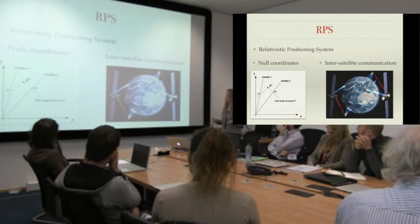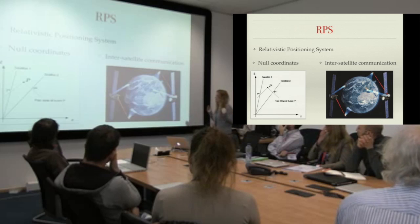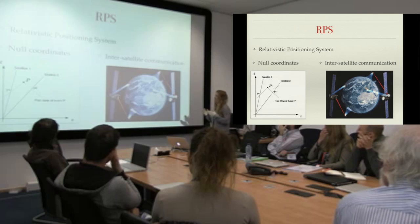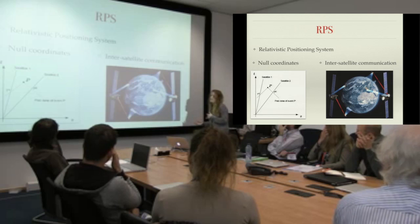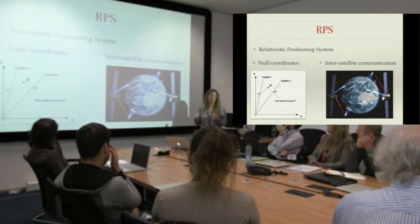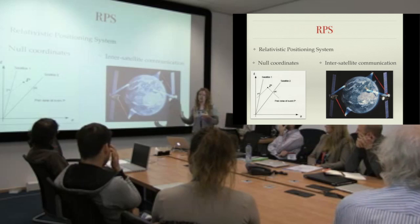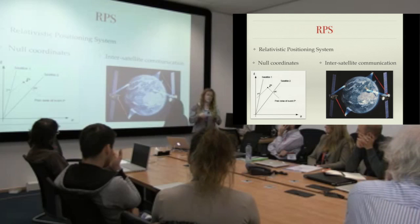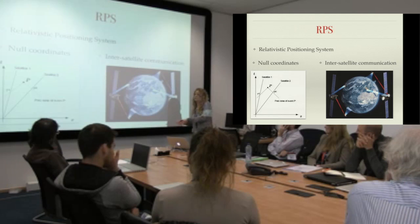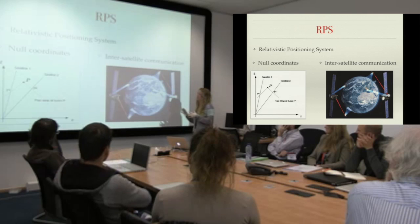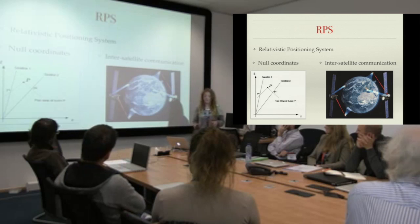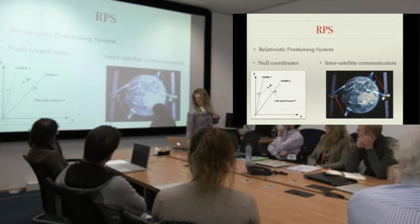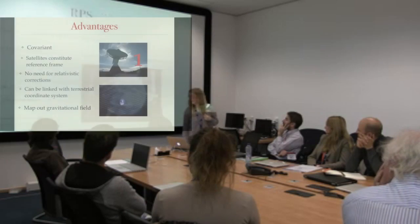What does that mean in reality? It means the satellites need to be able to communicate with each other. In the current system, the satellites don't talk to each other — they talk to the ground, the ground talks back, and then they talk to the user. What we're suggesting is that you could potentially cut out that ground segment, or at least part of it.